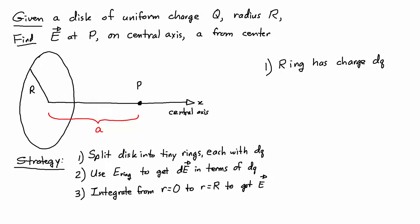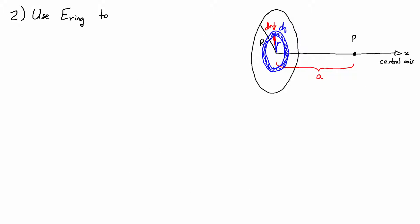So the first part is to split the disk into tiny rings, and I'll just draw in a single ring that has a charge dq and an area given by the circumference times dr. The next step is to use the expression for the electric field of a ring to get dE in terms of dq.